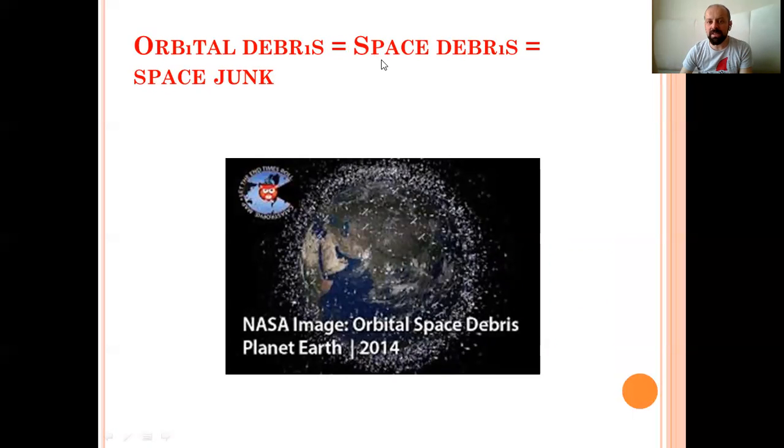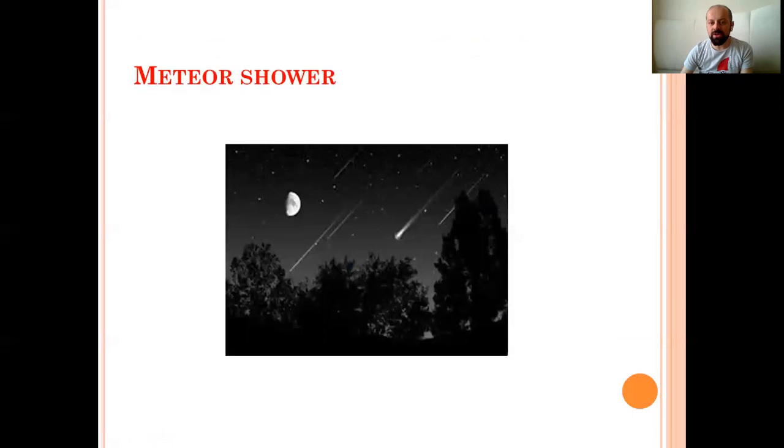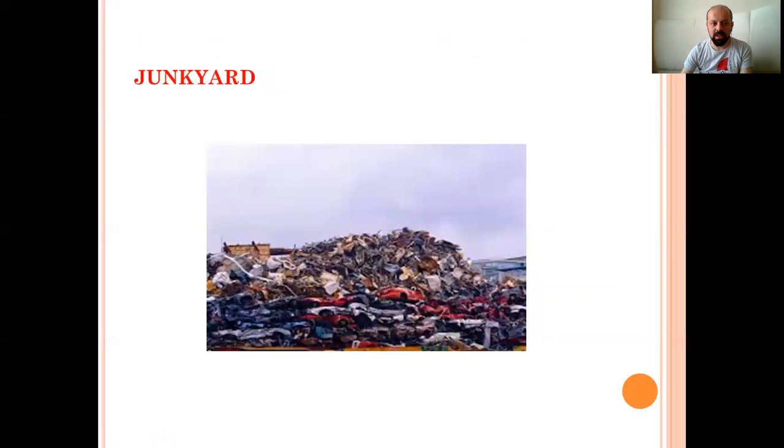Orbital debris, space debris, space junk. Üçü de aynı anlamda. Uzay çöplüğü. Bu uzay çöplüğünü ne oluşturuyor? Uzay içindeki sönmüş yıldızlar vesaire. Meteor shower. In Turkish meaning meteor yağmuru. Okay. Meteor shower. Junkyard. Yes, junkyard. Araba çöplüğü anlamına geliyor. Hurdalık da denilebiliyor. Junkyard.